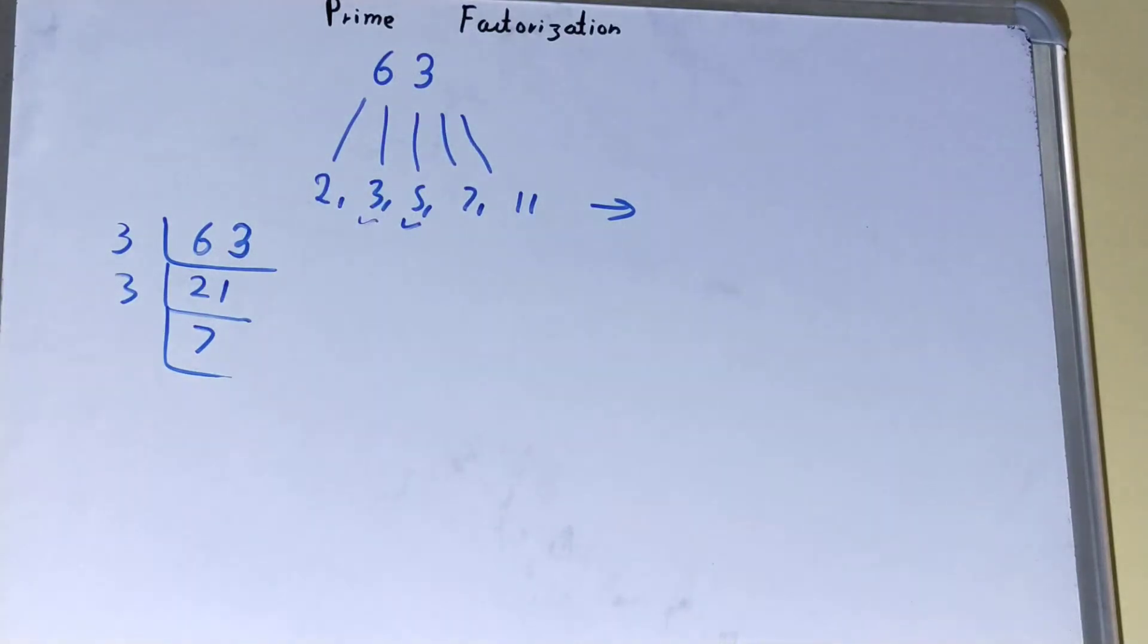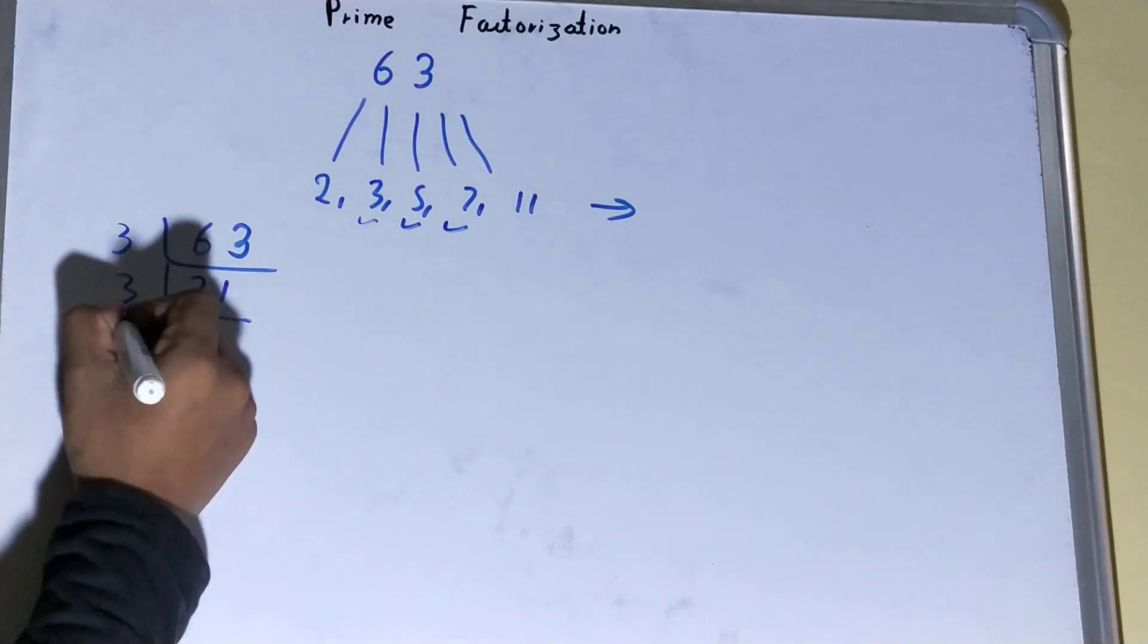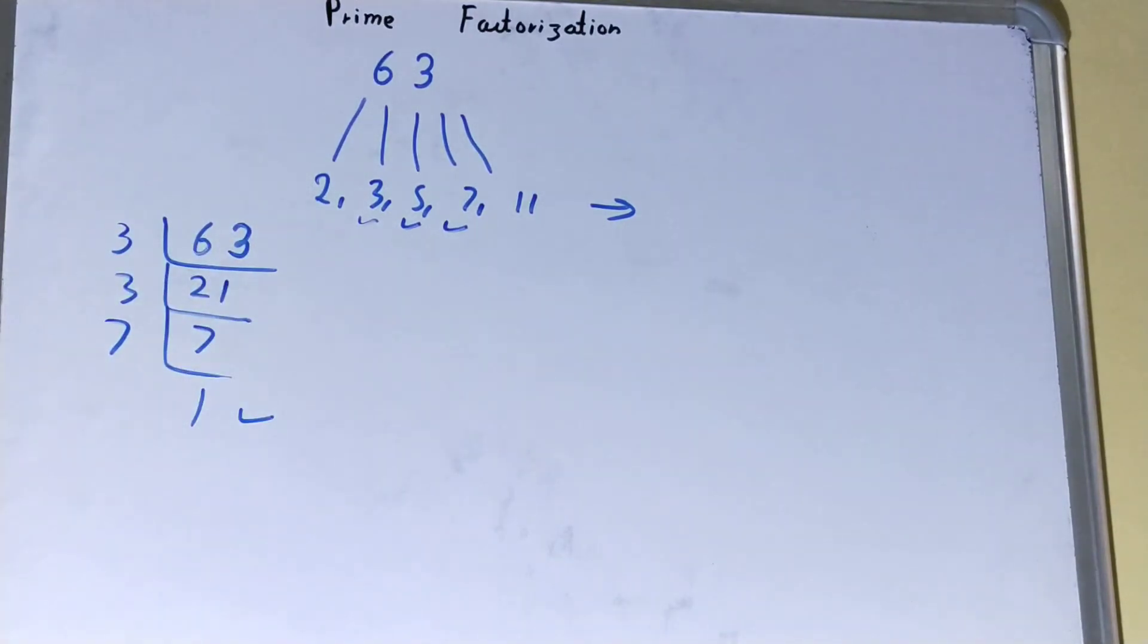Is 7 divisible by 5? No, so we'll go to the next number, that is 7. Is 7 divisible by 7? Yes, and we'll be left with 1. Once you are left with 1, your work is done.